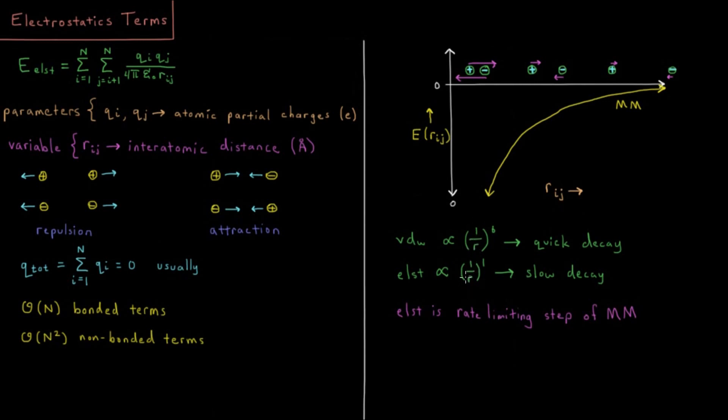Because this function decays very, very slowly, it ends up being the rate-limiting step of most of our molecular mechanics energy calculations. Because we have those n-squared non-bonded terms and we can't cut them off due to quick convergence like van der Waals. This slow decay makes it the rate-limiting step, and we have to include many, many pairs of these interacting charged atoms.